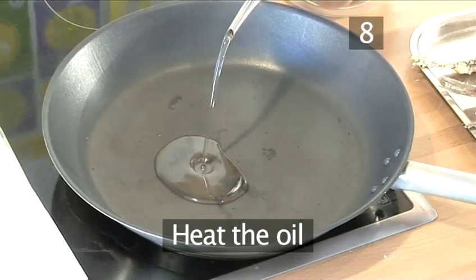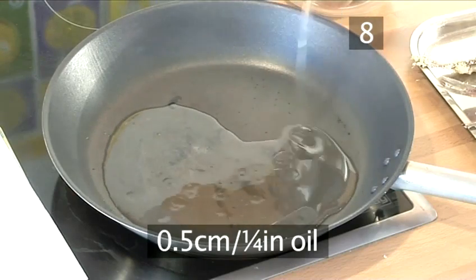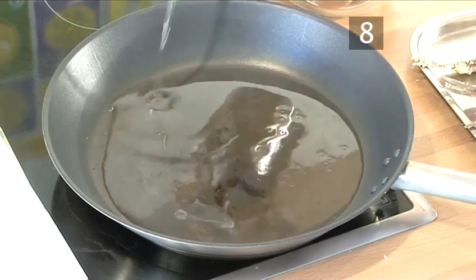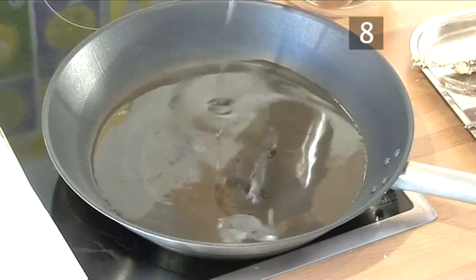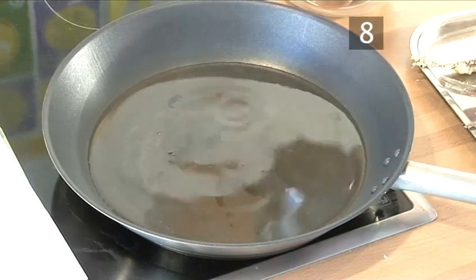Heat the oil. Heat about half a centimeter of vegetable oil in a large frying pan. Although we aren't going to deep fry the fish, you need to be generous with the oil for the breadcrumb coating to turn out just right.